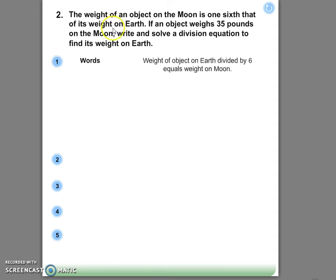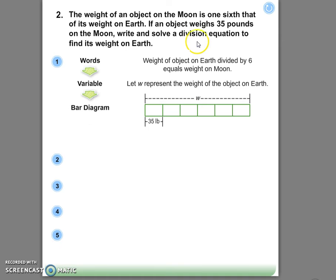The information we know is that the weight of an object on earth divided by 6 equals the weight on the moon. The reason we know that is because it tells us the weight of an object on the moon is one-sixth that of the weight on earth. So if we know we weighed 35 pounds on the moon, we have a bunch of little sections of 35 until we get to the entire weight on earth, W.